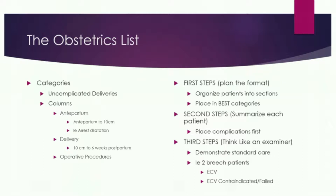Let me give you an example. I have an 18-year-old Gravida 1, Para 0. She was 39 weeks and one day, came in, spontaneously ruptured, and delivered a seven-pound baby. She did not need Pitocin, had an uncomplicated delivery, and had a second-degree laceration I repaired. She does not need to go on the case list — she can go as a number in the uncomplicated deliveries.